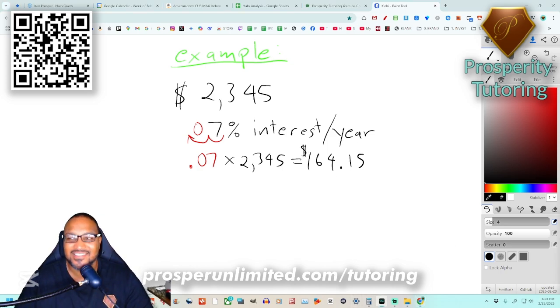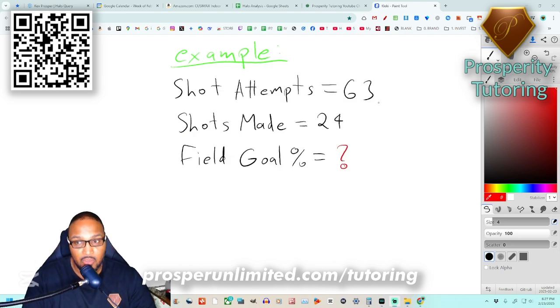What if I was playing basketball and I attempted 63 shots but I only made 24 and I'm trying to figure out my field goal percentage? Use the pizza pie method - the shot attempts is the entire pizza pie and the red slice is my makes.